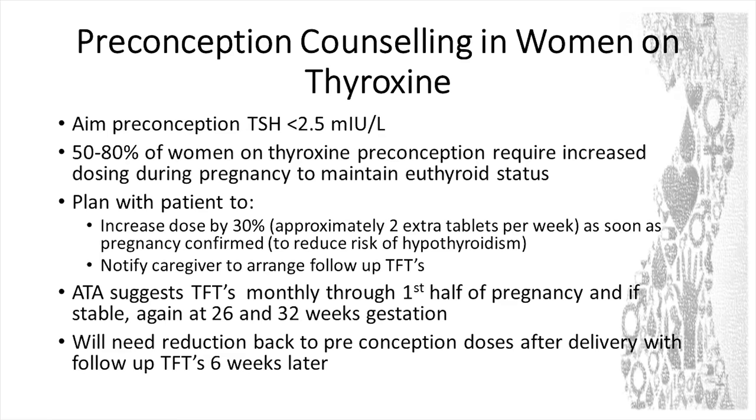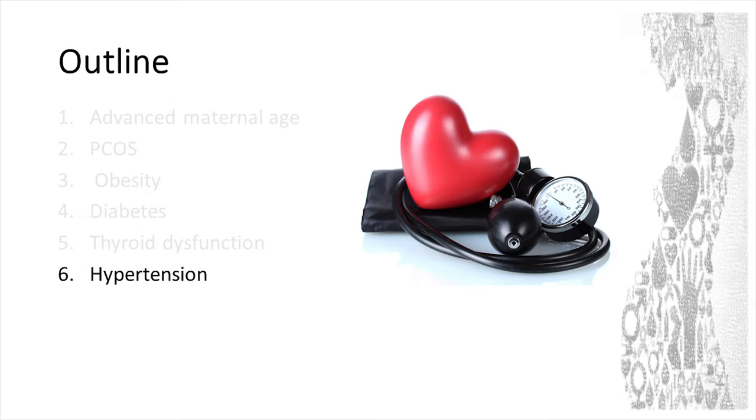Aim at that trimester-specific reference range. How often to do thyroid function tests? The American Thyroid Association says every four weeks for the first half of pregnancy. I think doing them regularly — at diagnosis of pregnancy, then four to six weeks after any dose changes — and when you have relative stability you can extend it a little. You should be doing them at least once a trimester in the second and third trimester. When they have their baby you'll need to reduce their thyroxine back to their preconception dose.